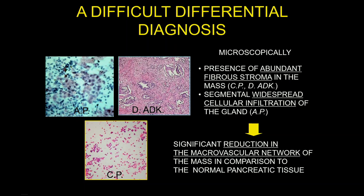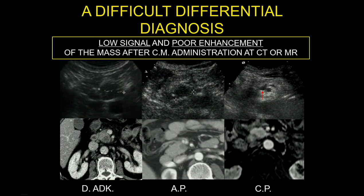There is a significant reduction of macrovascular — not microvascular, but macrovascular enhancement. This means what we can appreciate with contrast-enhanced CT or contrast-enhanced MRI represents macrovascular enhancement. Thus, these lesions can appear hypoechoic, hypodense, hypointense, and hypovascular — either in ductal adenocarcinoma, autoimmune pancreatitis, chronic pancreatitis, or focal chronic pancreatitis.